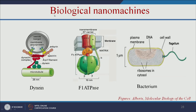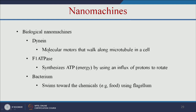Now let us see protein-based nanomachines: dynein, F1-ATPase, and bacteria flagella. Dynein is a molecular motor that walks along microtubules in the cell. ATPase synthesizes ATP by using the influx of protons to rotate. Bacterium uses flagella to move from one location to another location towards a chemical — that is, food.